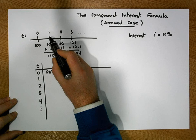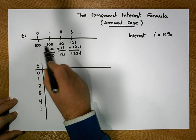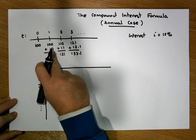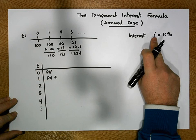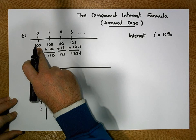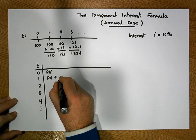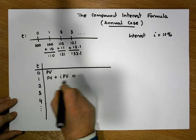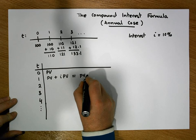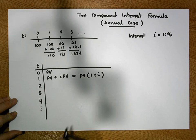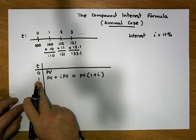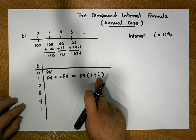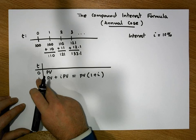After one year has elapsed, what we have in the account is what we had in the previous year — our principal value PV — plus an interest payment. The interest payment is i percent of what we had in the previous year, so it's i × PV. Using a small bit of algebra, this simplifies to PV × (1 + i). So after one year has elapsed, what's in the account is PV(1 + i).